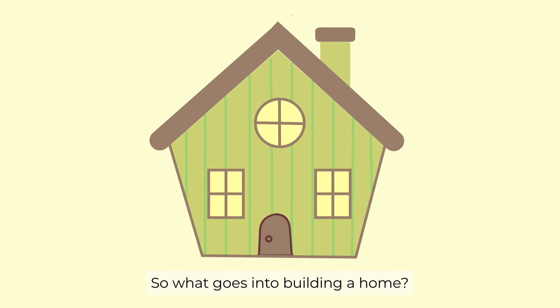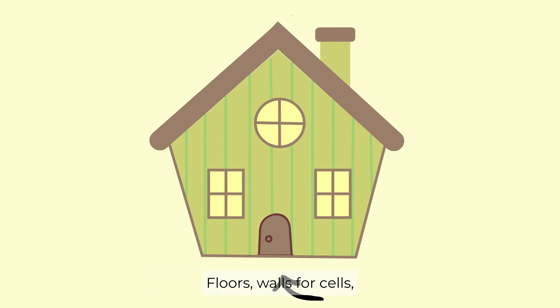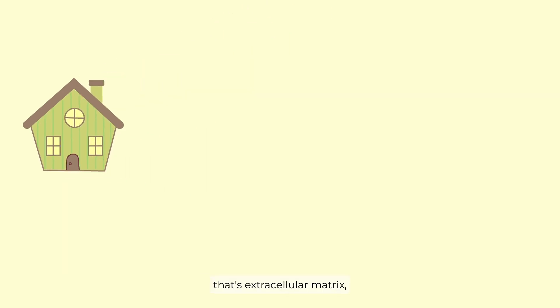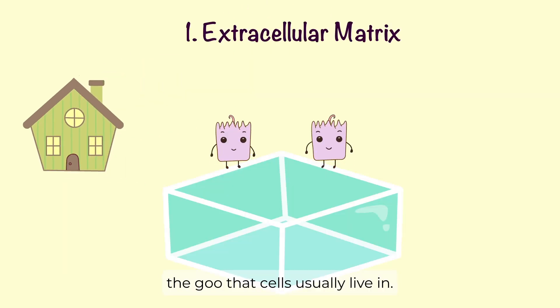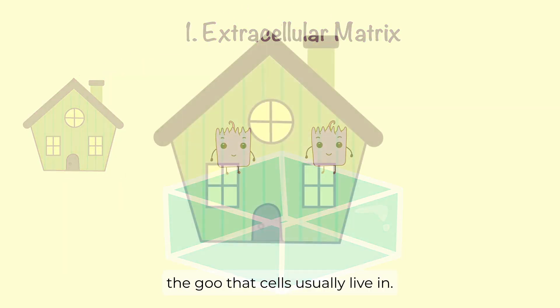So, what goes into building a home? First, we need the structural stuff — floors, walls. For cells, that's extracellular matrix, the goo that cells usually live in.